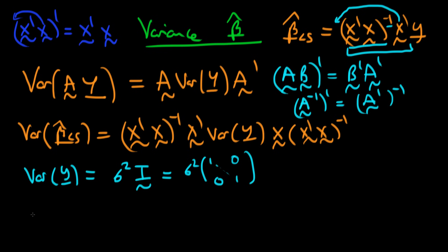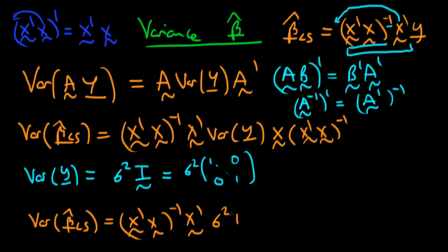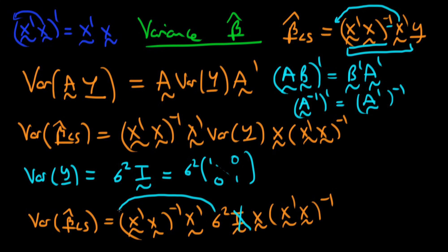Substituting this expression for Var(Y) into our earlier expression, we have that the variance of beta hat least squares equals (X'X)⁻¹ times X' times σ²I times X times (X'X)⁻¹. The identity matrix times X is just X, so we can drop it. Moving the constant σ² out front, we then have (X'X)⁻¹ times (X'X), which cancel, leaving us with the variance of beta hat least squares equal to σ²(X'X)⁻¹.